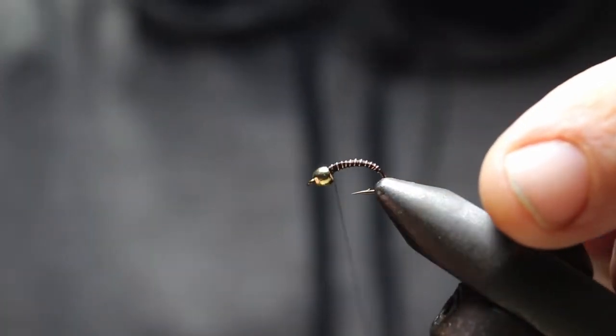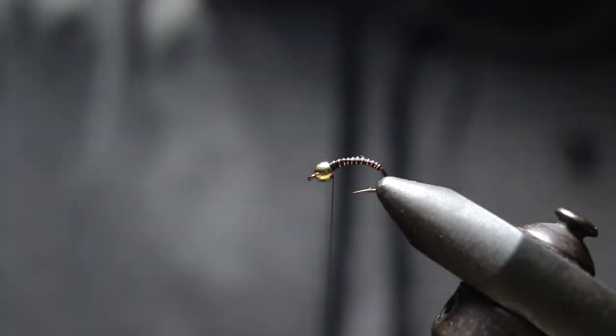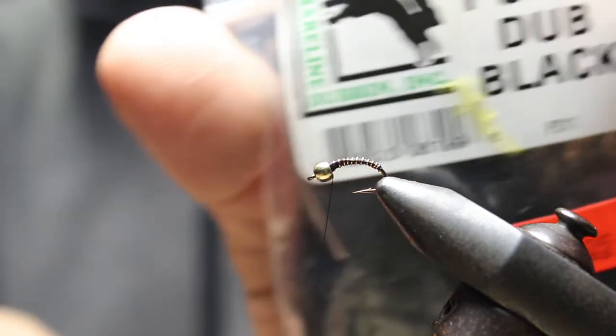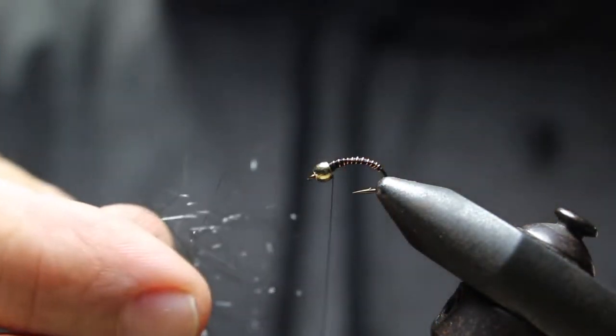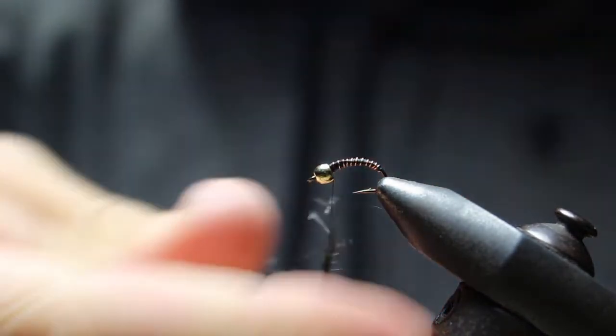That's pretty much the bulk of this pattern. The only other thing you can do is add a little bit of a thorax. I'm going to use some of this polar dove. Peacock is also a good one. I'm just going to break off a little bit and that's way too much. Just enough to let it stick out.